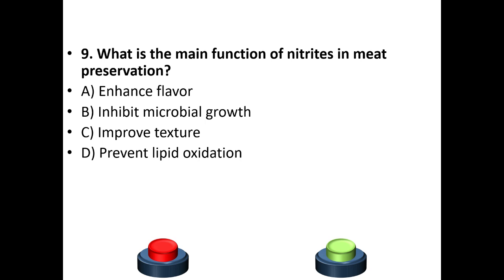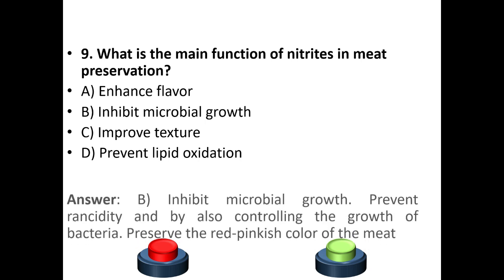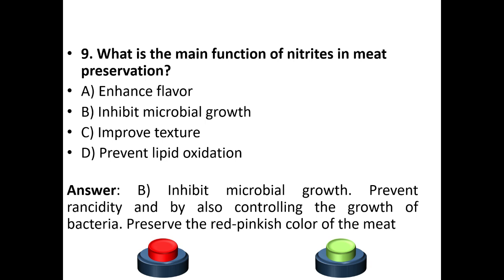Ninth question: What is the main function of nitrates in meat preservation? A) enhance flavor, B) inhibit microbial growth, C) improve texture, D) prevent lipid oxidation. The answer is option B — inhibit microbial growth. Nitrates prevent rancidity by controlling bacterial growth and preserve the red/pinkish color of the meat.